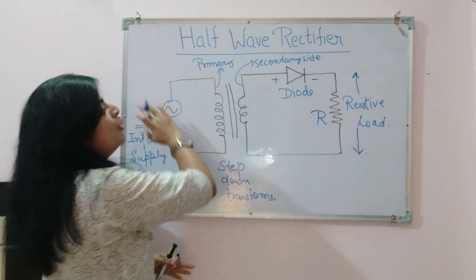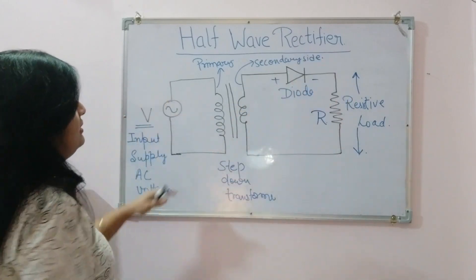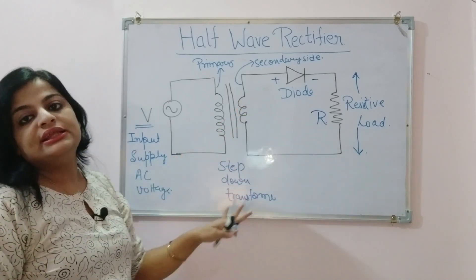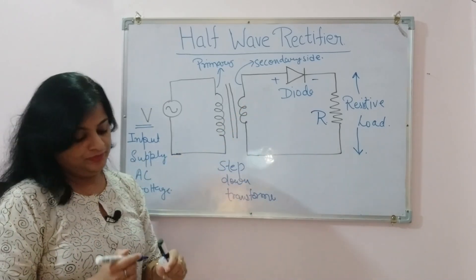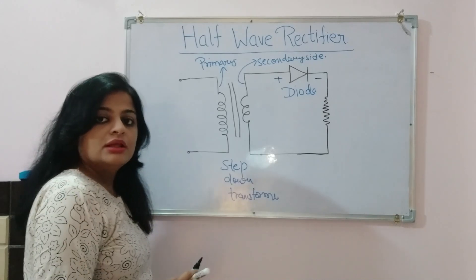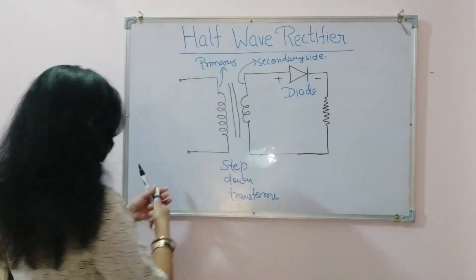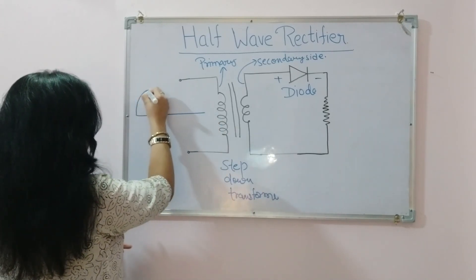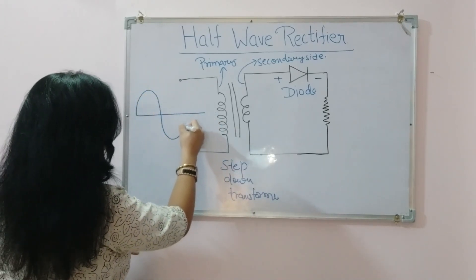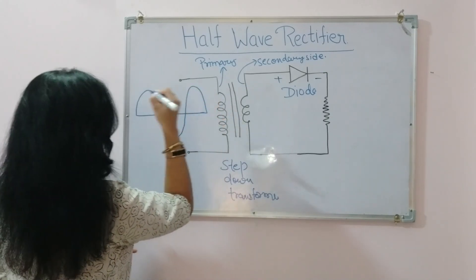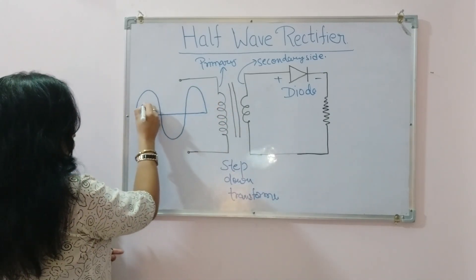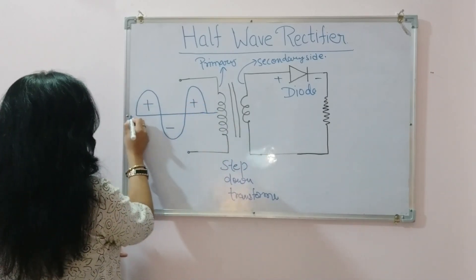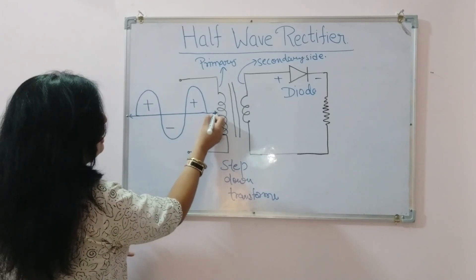So this is the overall complete setup and diagram for the half wave rectifier. Now let's see how it works. Suppose we apply an AC input signal waveform with positive and negative half cycles — this is the positive half cycle and this is the negative half cycle — that is the AC input signal going into the transformer.